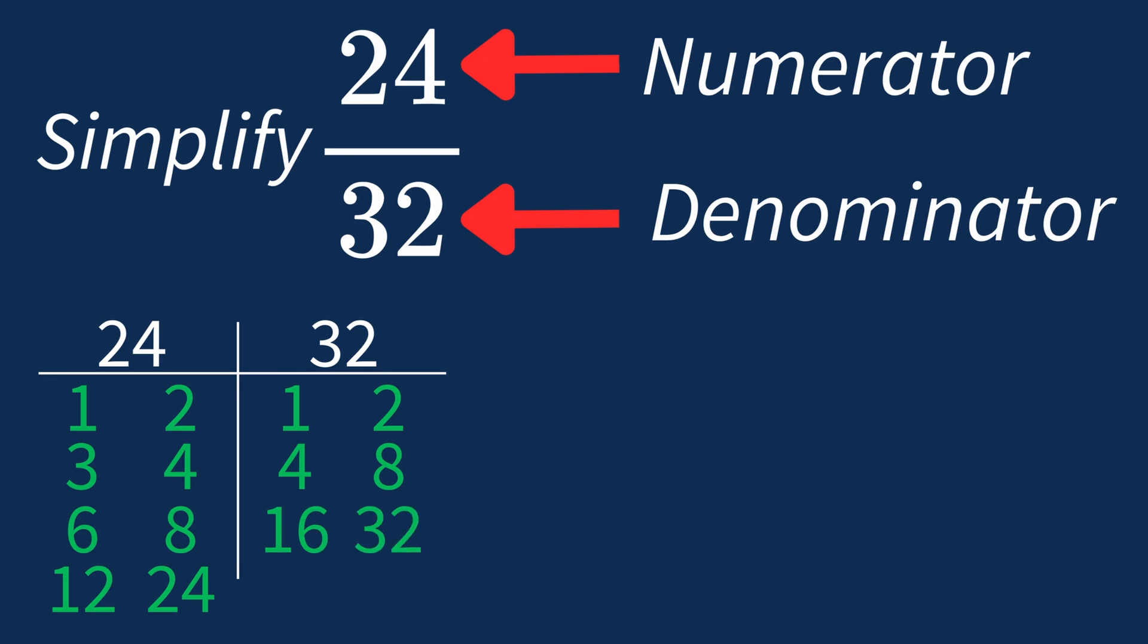So the largest common factor between 24 and 32 is 8. This means we can divide both the numerator and denominator by 8 to simplify the fraction.